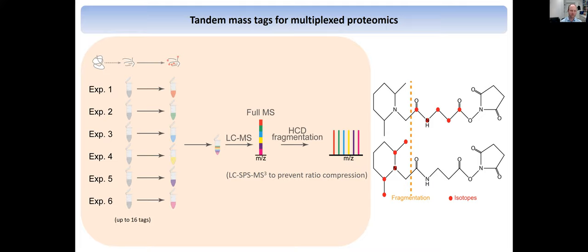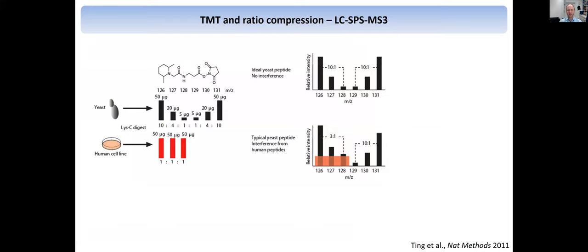So this is our way for relative quantification across samples. This has been optimized a lot over the last 10 years. There were some problems with it in the beginning that hampered how TMT was used. For example, if you take known ratios — 10 to 4 to 1 to 1 to 4 to 10 — and mix it with another lysate, what we observe is that we don't get this perfect 10 to 1 ratio anymore. There's some interference and we have ratio compression — it's only 3 to 1 instead. The correct direction is maintained, but it's not accurate anymore.